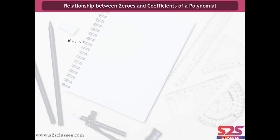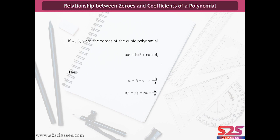And if α, β, γ are the zeros of the cubic polynomial ax³ + bx² + cx + d, then α + β + γ = -b/a, and α·β + β·γ + γ·α = c/a, and α·β·γ = -d/a.